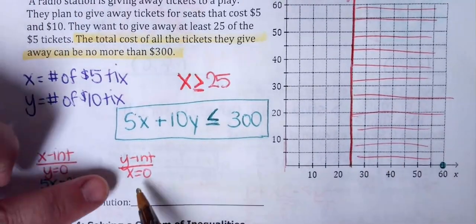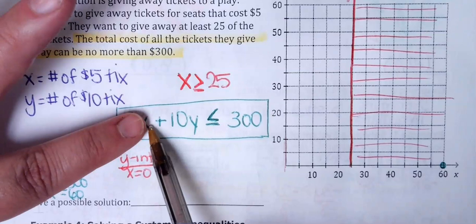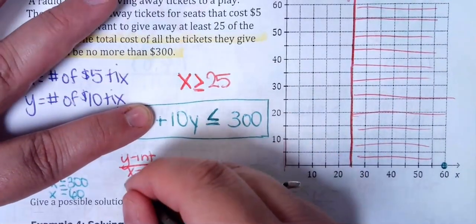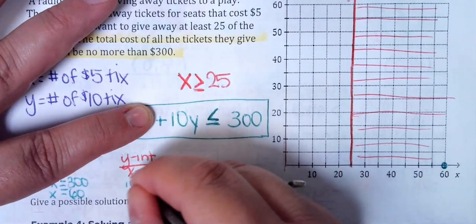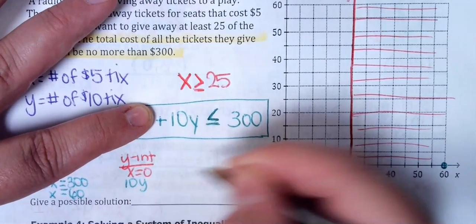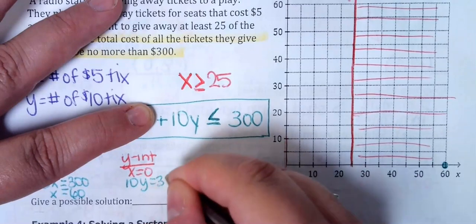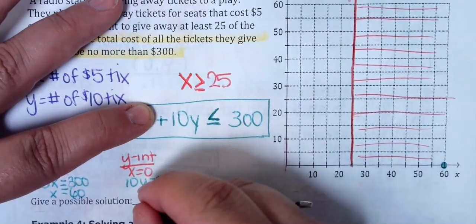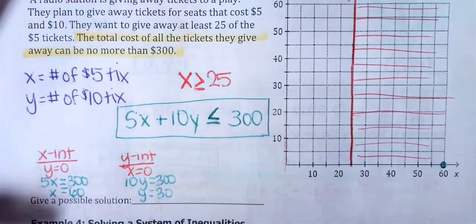Now, if I then go ahead and plug in 0 for x here, 5 times 0 is 0, so that just wipes that coordinate, or that part of the equation or inequality here out. So I'm going to do 10y, and just go ahead and set that equal to the 300. We're just looking for the point here. I'm going to divide both sides by 10, so then the y-intercept is 30.